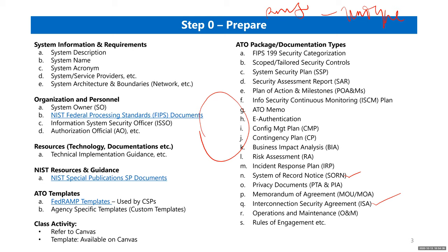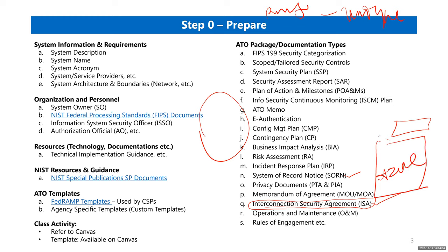A good example of a system that might never need an ISA is a simple public-facing website hosted on a cloud provider like Azure, serving static HTML or CSS with no connection to any other system. It's just exposed to the internet for information purposes.